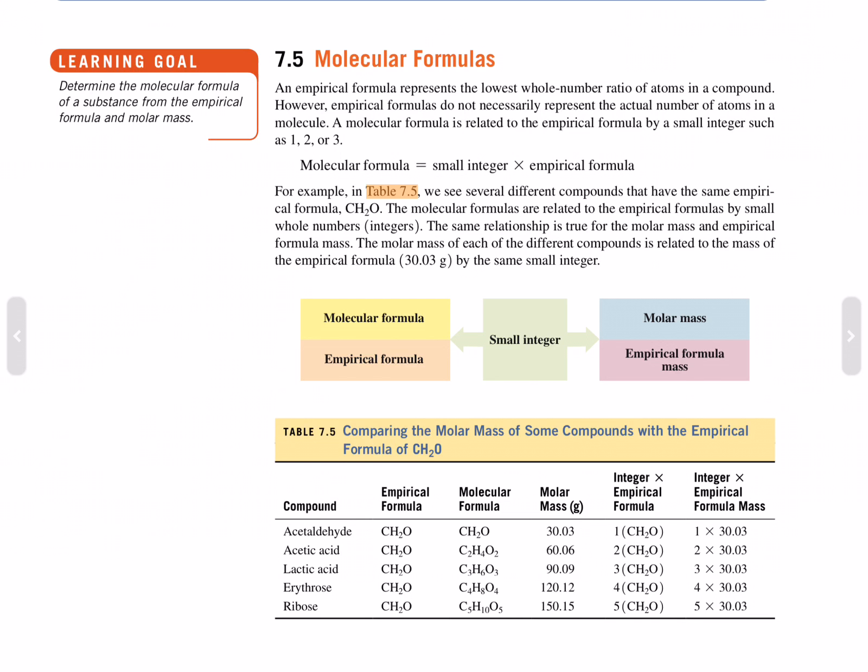Acetaldehyde has empirical formula CH2O and molecular formula CH2O with molecular mass 30.03. Everything is multiplied by 1. Acetic acid has empirical formula CH2O and molecular formula C2H4O2 with molecular mass 60.06. So that's twice the molar mass, so everything is multiplied by 2.